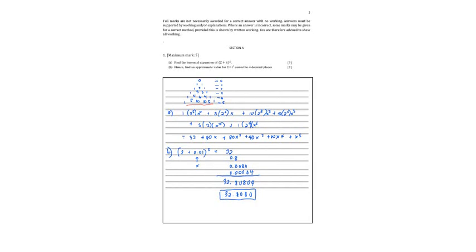So 1 times 2 raised to 5, x to 0 plus 5 times 2 raised to 4, x raised to 1 plus 10 times 2 raised to 3, x raised to 2. So we are just decreasing the exponents of 2 and increasing the exponent of x. So simplifying this, I'll have 32 plus 80x plus 80x squared plus 40x cubed plus 10x raised to 4 plus x raised to 5.